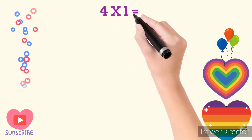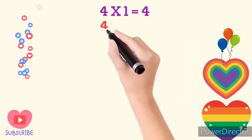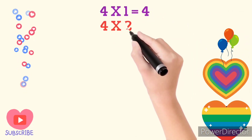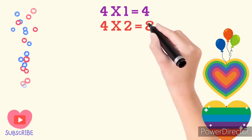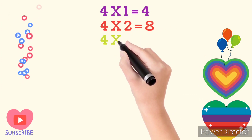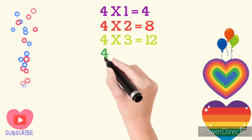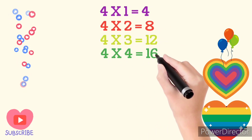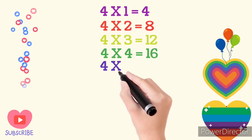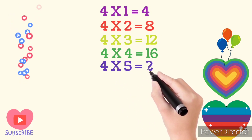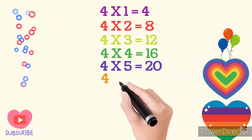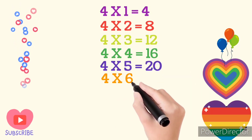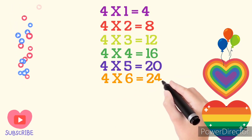4 times 1 are 4. 4 times 2 are 8. 4 times 3 are 12. 4 times 4 are 16. 4 times 5 are 20. 4 times 6 are 24.